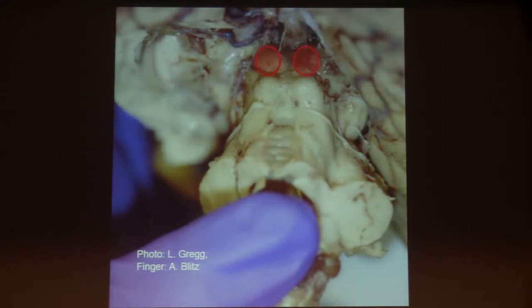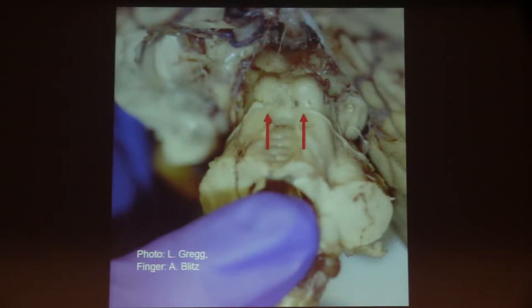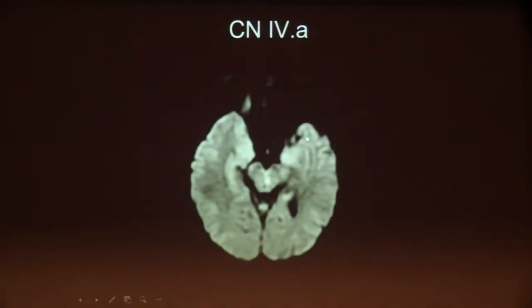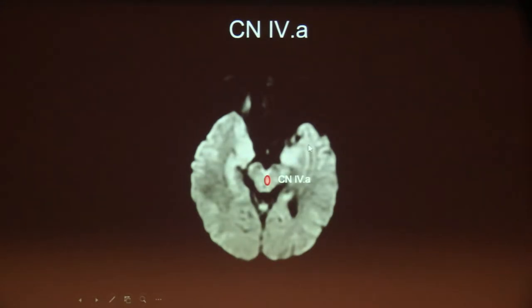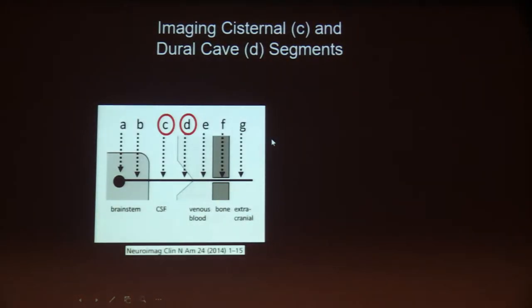Here's the pineal gland, the superior colliculi from the dorsal aspect. My thumb is in the fourth ventricle in this dorsal view with the cerebellum removed. Here are the inferior colliculi, and those are the trochlear nerves arising just caudal to the inferior colliculi, lateral to the frenulum of the superior medullary velum. The trochlear nerve decussates — it crosses the midline before exiting the brainstem — which is why the patient had a right-sided superior oblique palsy despite having a stroke on the left side.